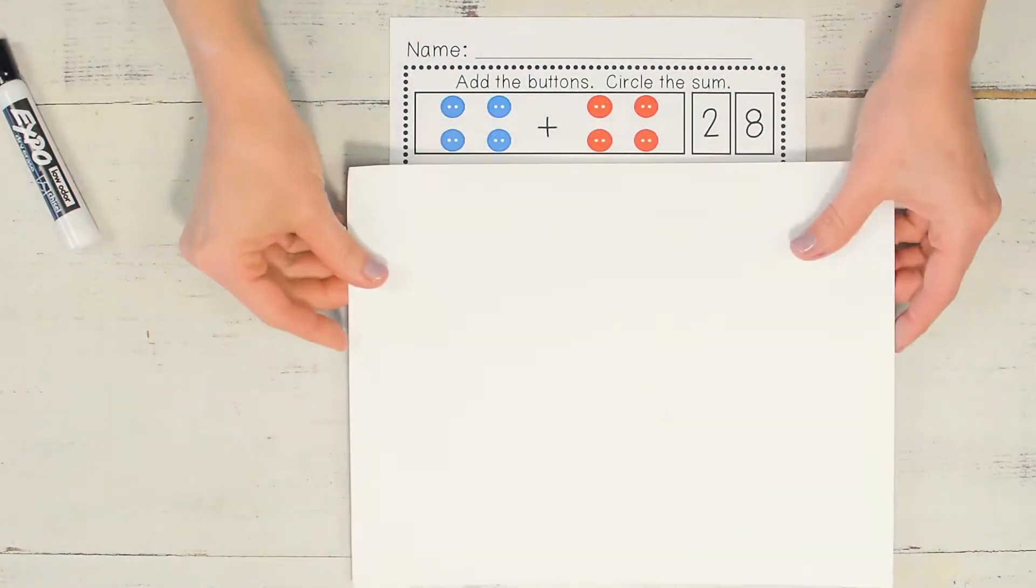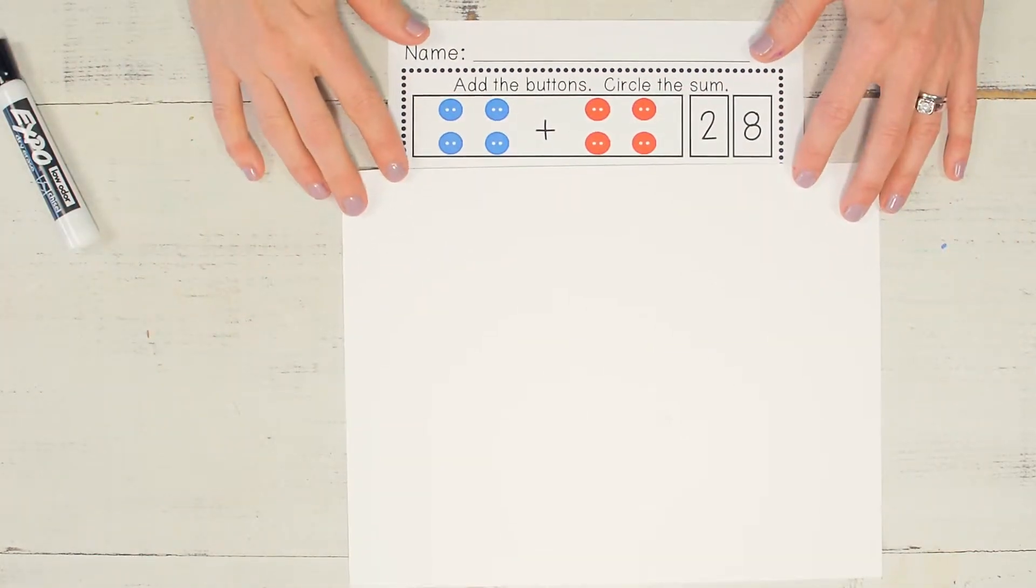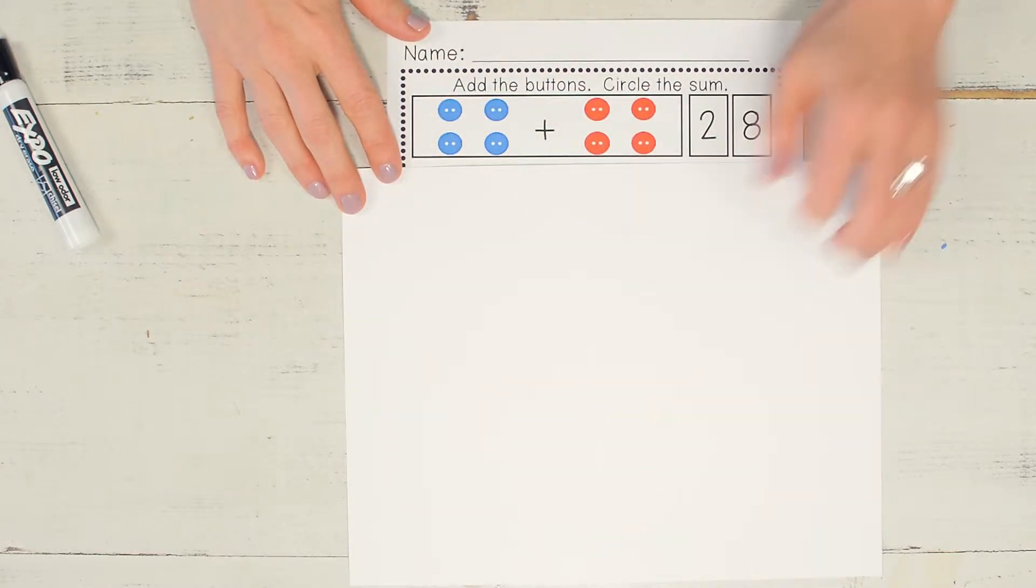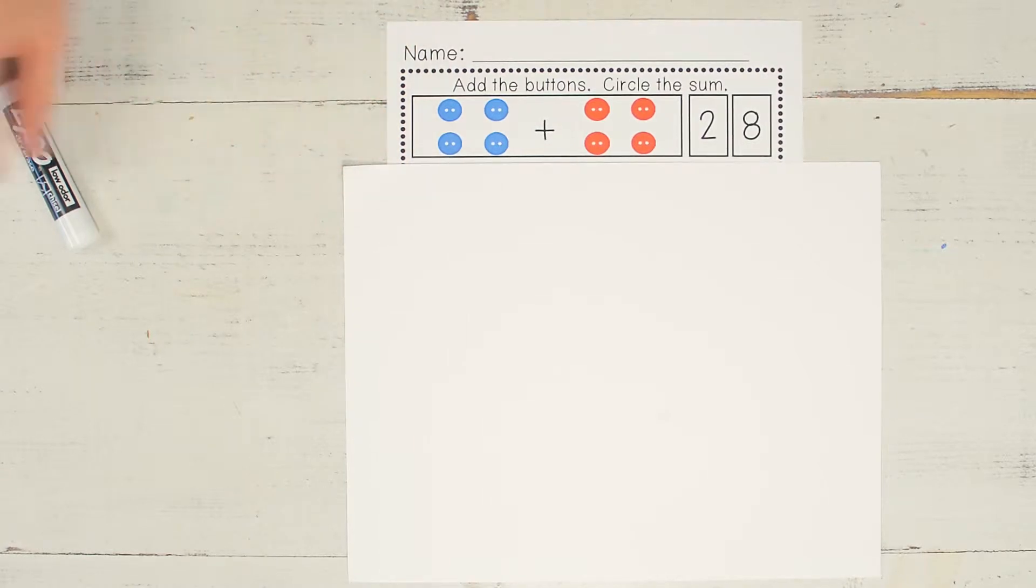If you're doing this with the whole activity like this, it's a lot easier to put a piece of paper over the rest of the activity, so you're just focusing on this. So we're going to count the buttons and then we're going to circle the correct answer.